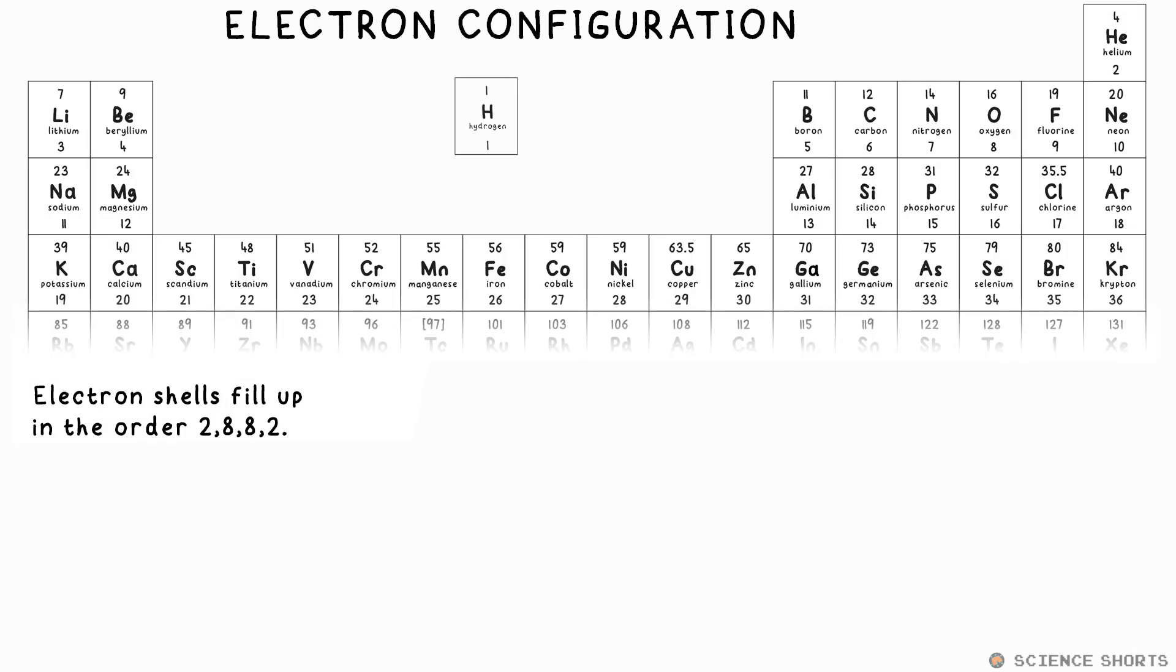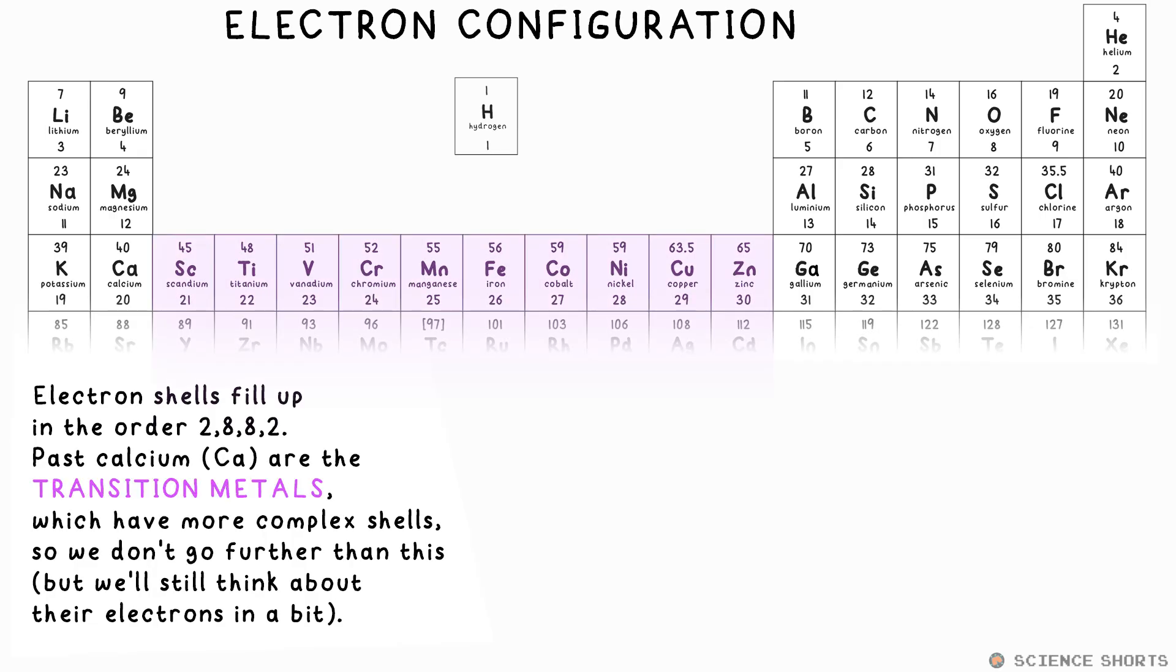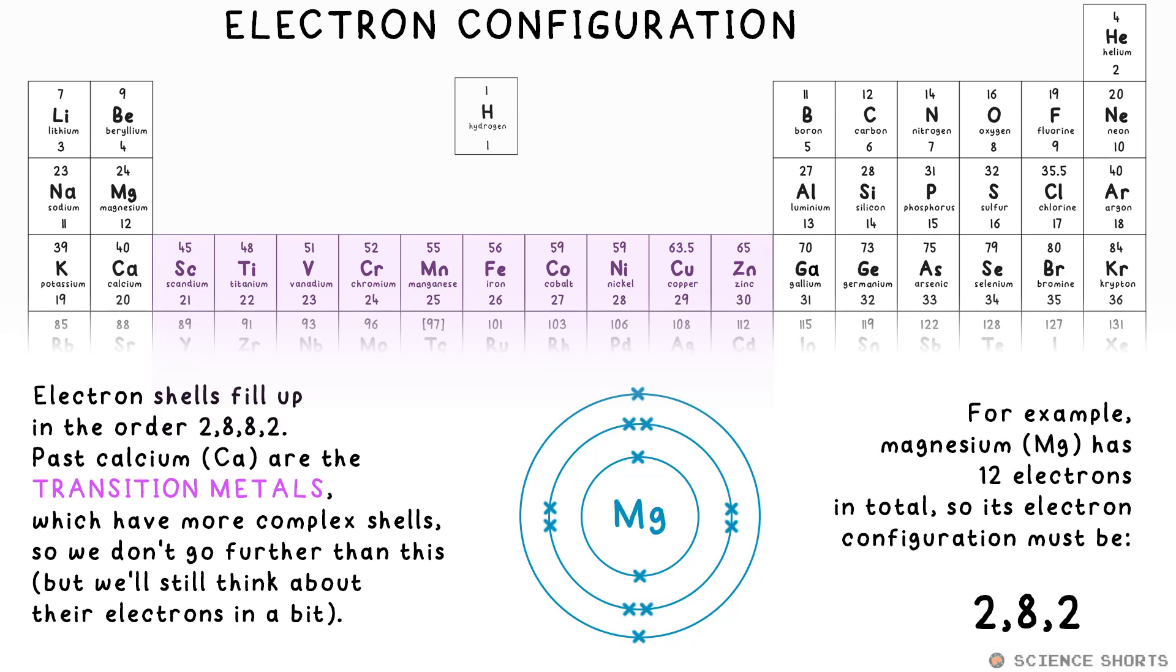Electrons exist in shells around the nucleus. The shells fill up from the inside, with a maximum of two electrons on the first shell, eight on the second, and eight on the third shell, then we only go to two on the fourth shell. That's 20 electrons altogether, which brings us to a calcium atom. After this, we get into the transition metals, where things get a little bit crazy, so we leave that for A-level chemistry. So we only care about the electron configurations going up to 2882. Magnesium has 12 electrons, so its electron configuration must be 282.